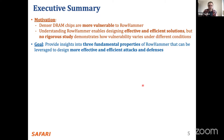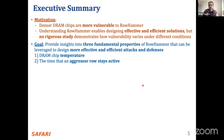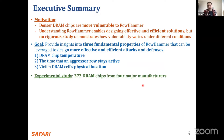Our goal in this paper is to provide insights into three fundamental properties that can be exploited to design more effective and efficient attacks or defenses. These properties are: the DRAM chip's temperature at the time the aggressor row is active during a row hammer attack, the memory access pattern — meaning how long the aggressor row stays active — and the physical location of the DRAM cell in the chip, which matters for deciding where to place sensitive data or where to attack.